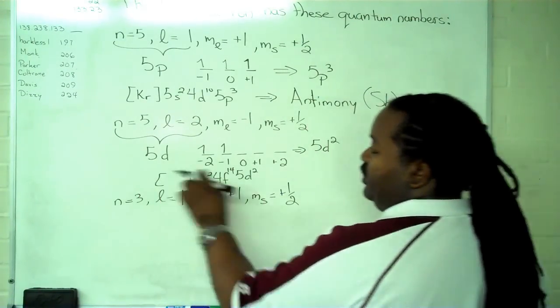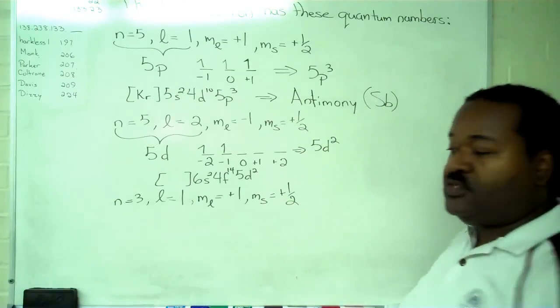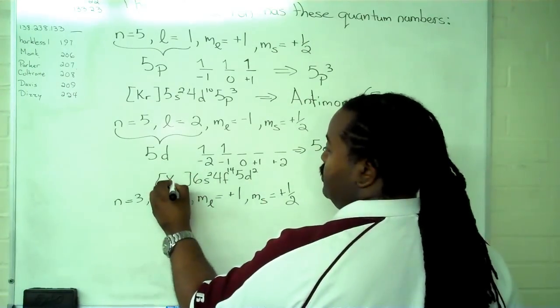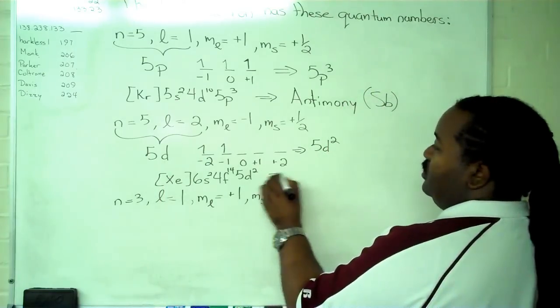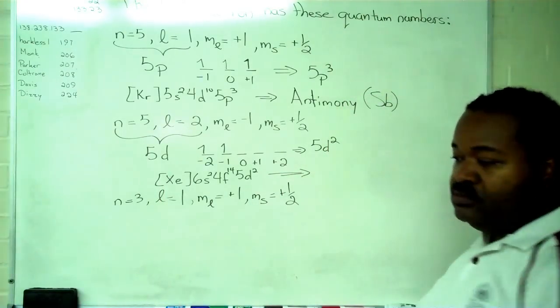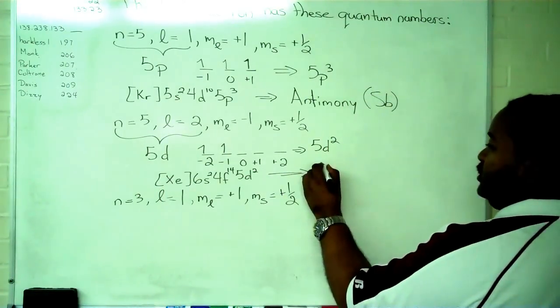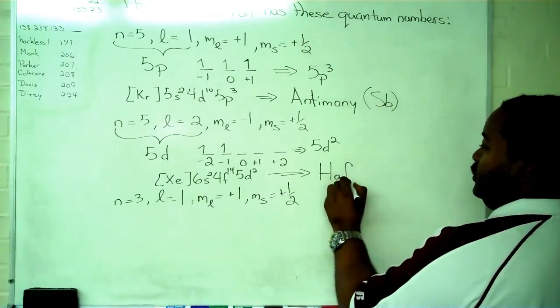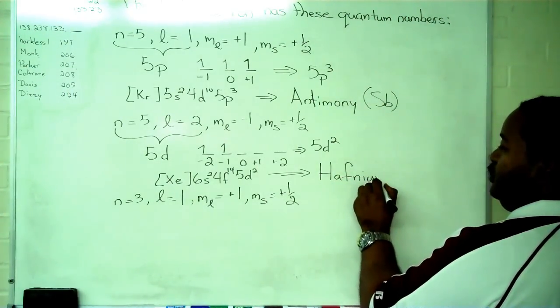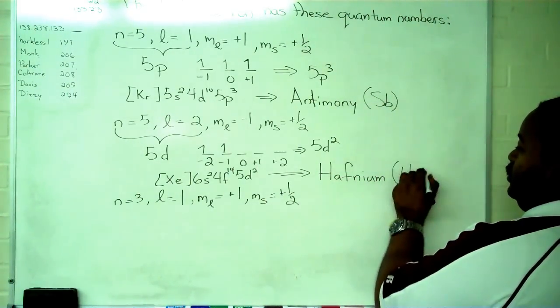And once again, you'll have to go to the periodic chart to look up the noble gas core. In this case, we had xenon. And as a result, we get that our answer is hafnium, Hf.